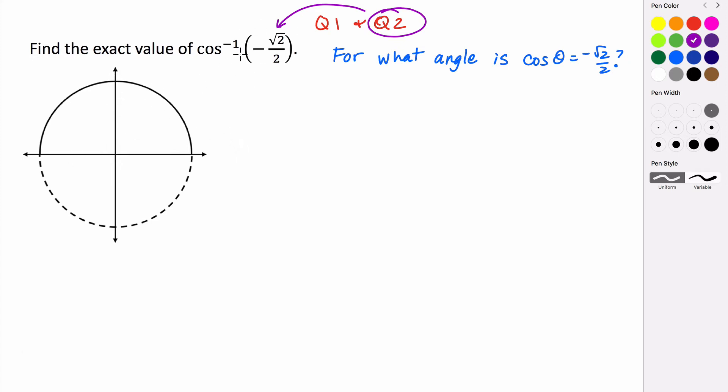Which angles have values of rad 2 over 2? Well, we know that here is 0, 1. At 2 pi over 3, we have negative 1 half rad 3 over 2.